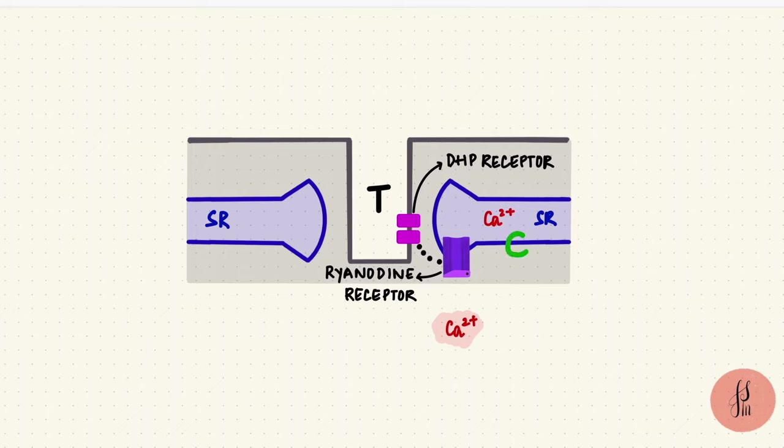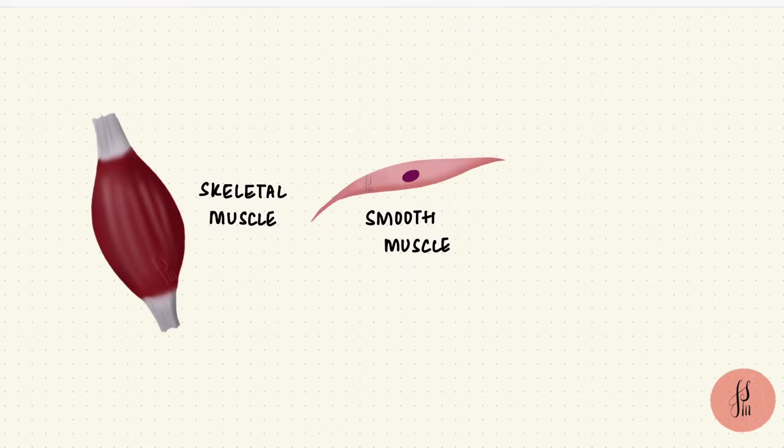The calcium ATPase pump on the surface of the sarcoplasmic reticulum pumps calcium back into it. And once the intracellular calcium levels come back down, the muscle relaxes. That's skeletal muscle. Now let's see how things are different in smooth muscle.